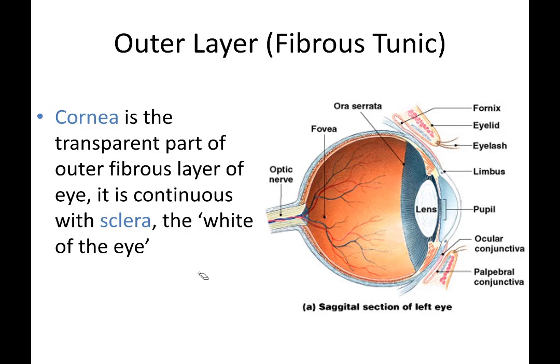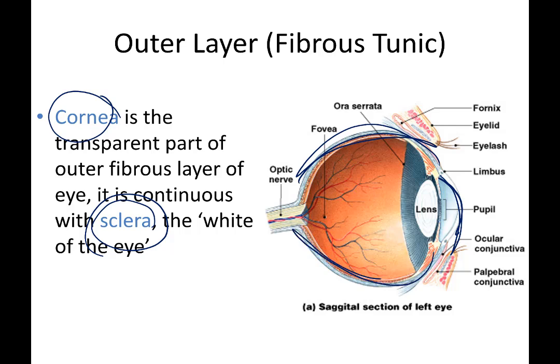The outermost layer, known as the fibrous tunic, is made of both the cornea — the clear part in front — and the sclera, the white part that forms the remaining portions of the eyeball.